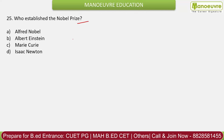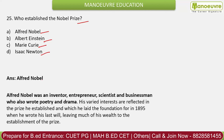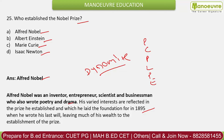Question 24: Who established the Nobel Prize? Options: Alfred Nobel, Albert Einstein, Marie Curie, Isaac Newton. The correct answer is Alfred Nobel. Alfred Nobel was an inventor, entrepreneur, scientist, and businessman who also discovered dynamite. He announced the Nobel Prize in 1895 in his name. The award is given in six fields: physics, chemistry, physiology or medicine, literature, peace, and economics.